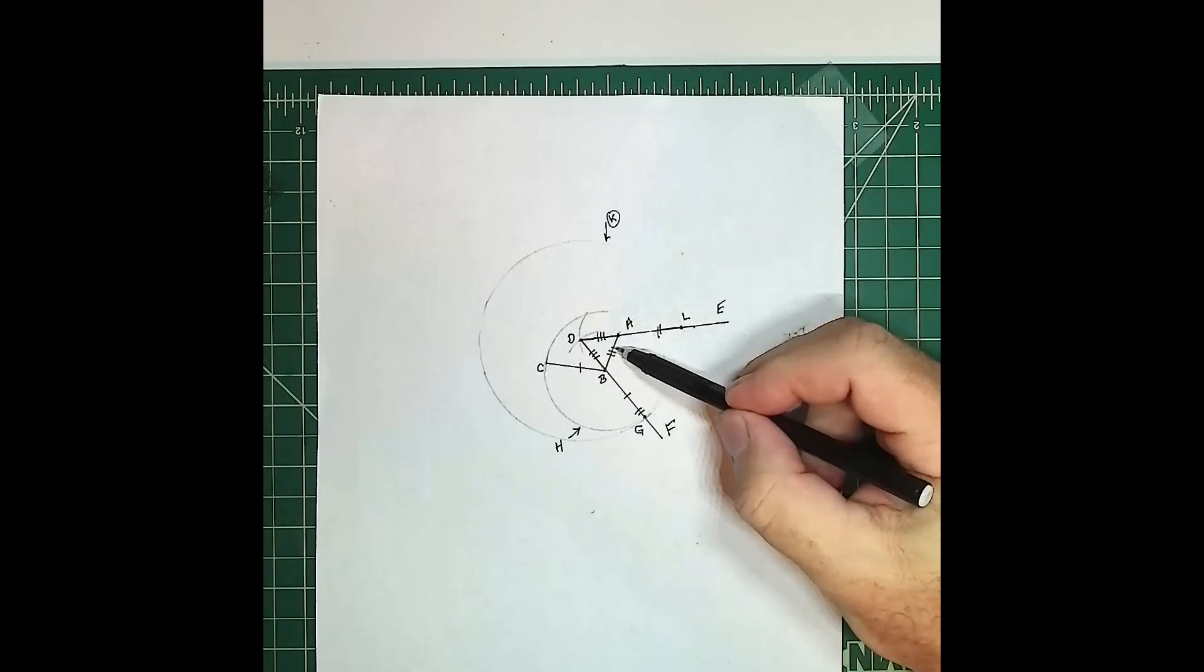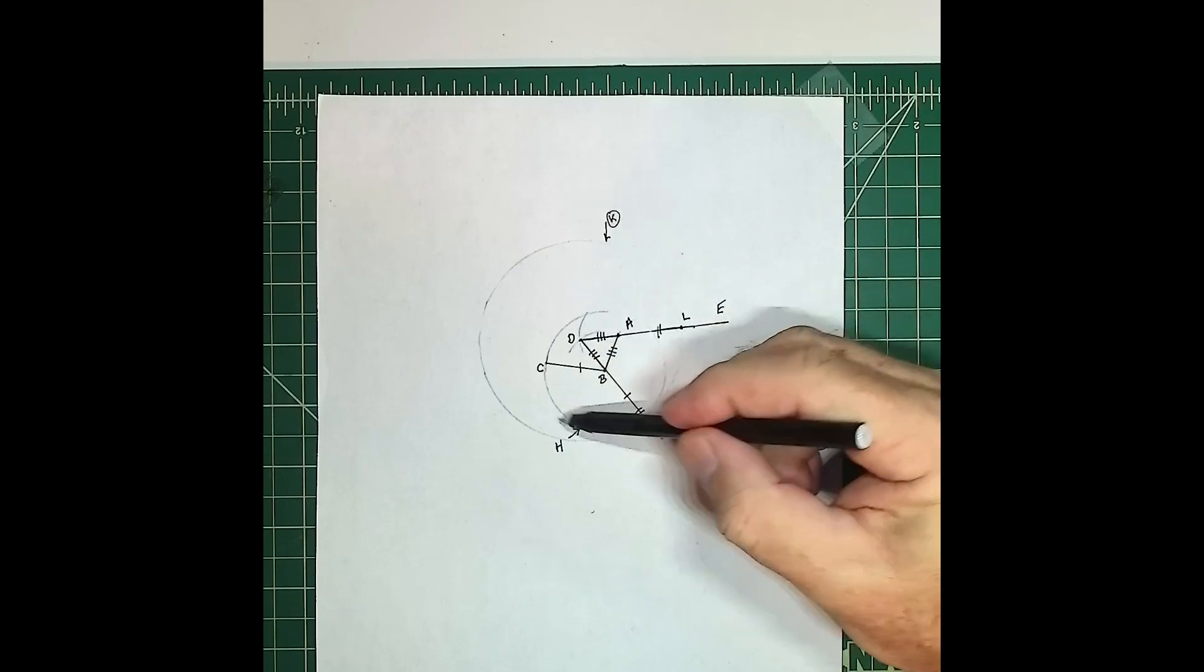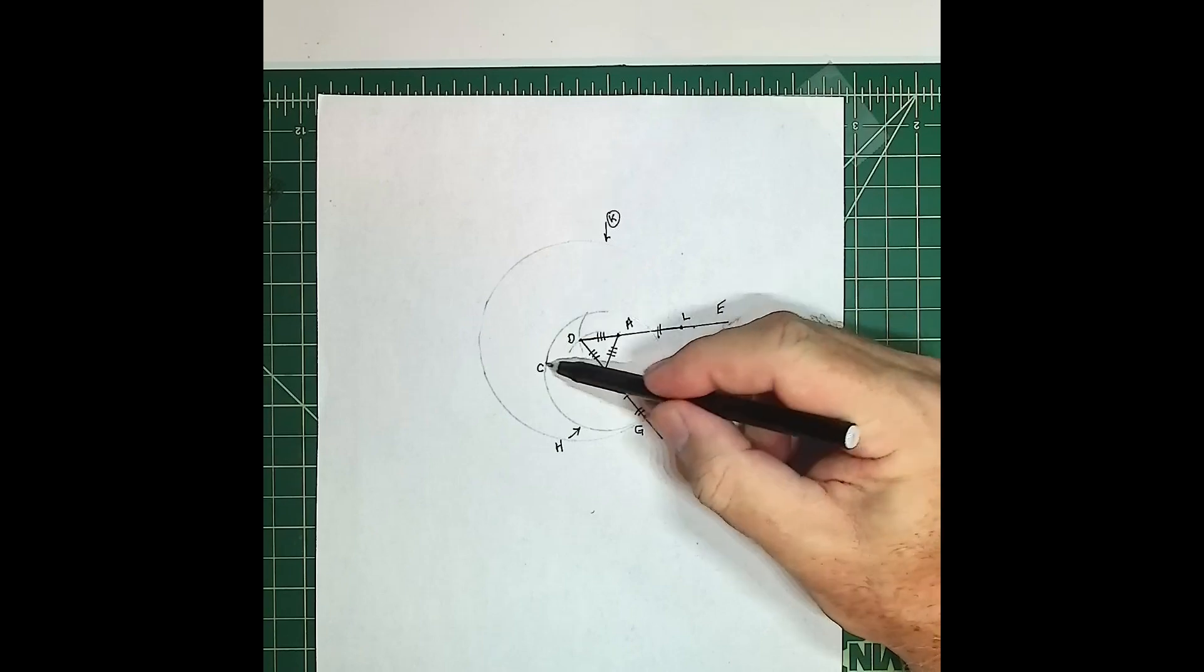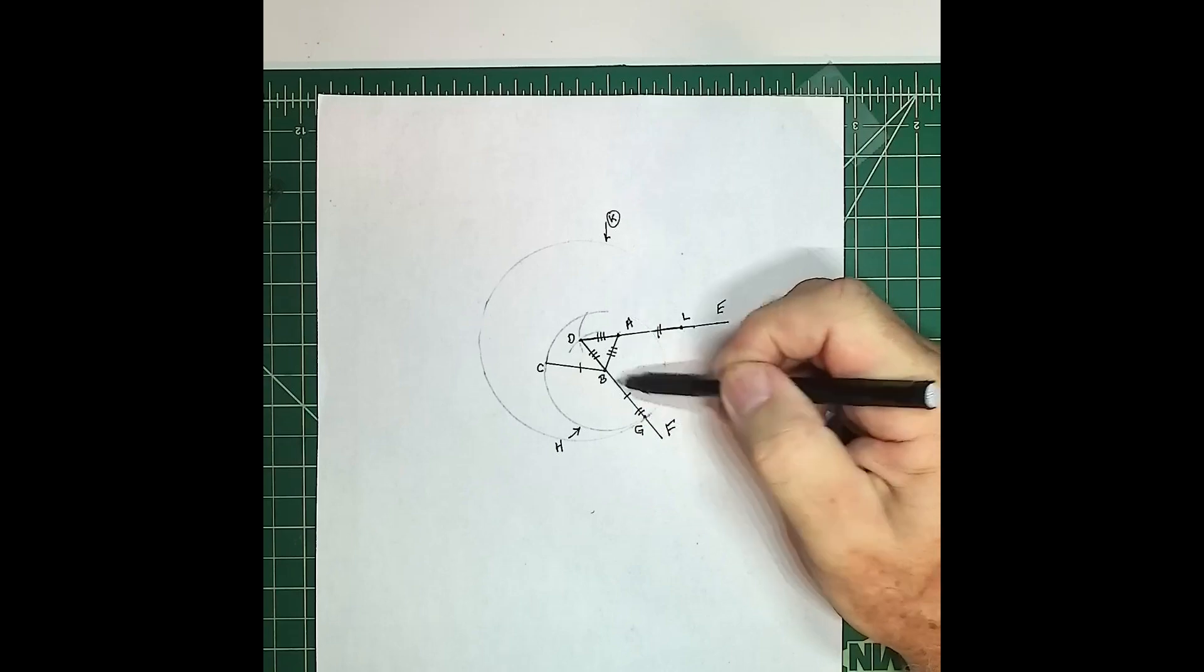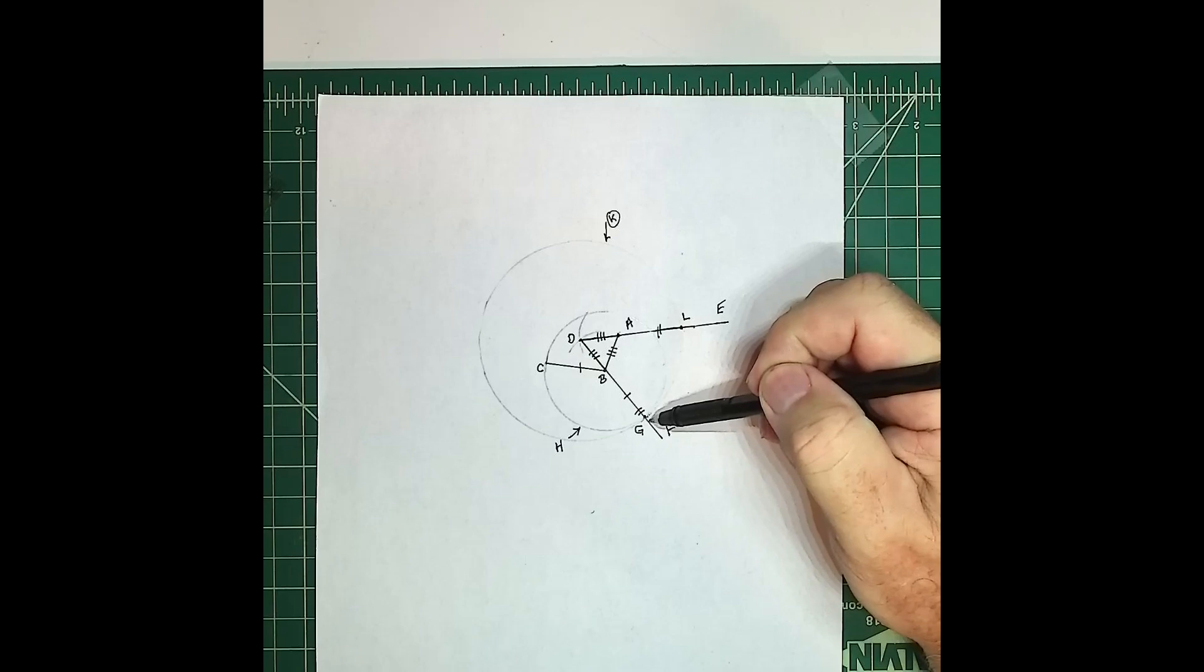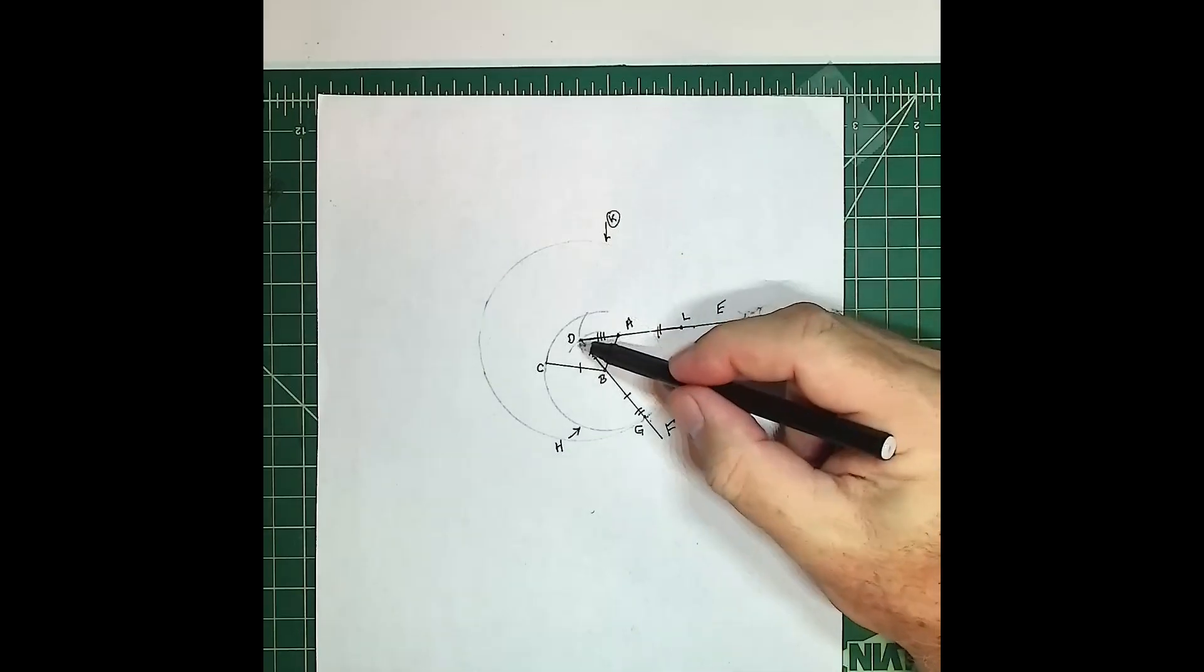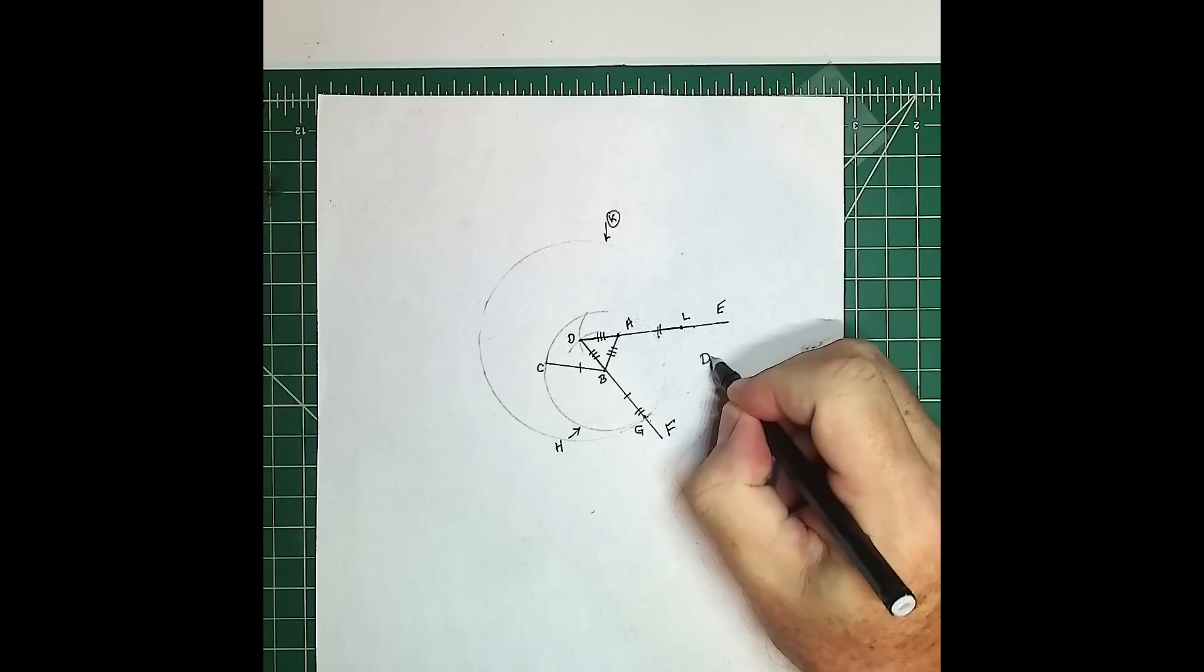And why is that? Because the three hash marks here represent the equilateral triangle. This side is equal to that side is equal to that side. Then we have circle H on the inside, and circle H has a radius of BC. Well that radius is also the same as B to G. And then we have the large circle with radius DL or DG. They're both the same. So this side is the same as this side.